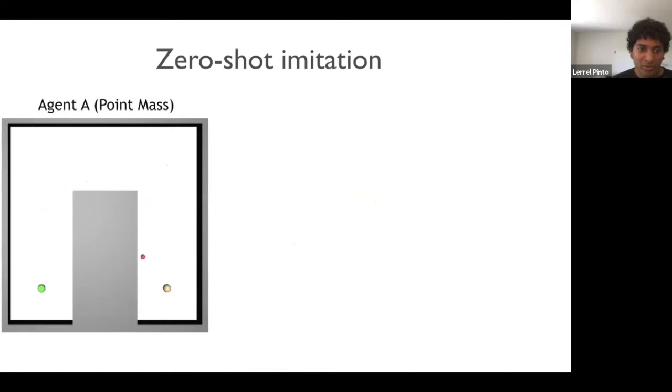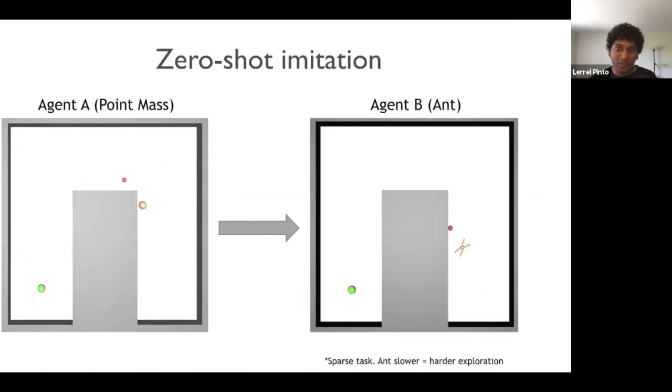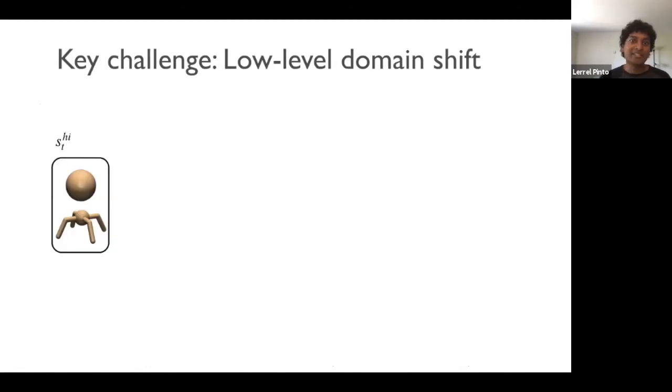Now let's look at a slightly harder problem where agent A has to reach the green dot, but it should do so with an obstacle in between. Now if you transfer this policy from agent A to agent B, we see that the ant is able to go a little bit, but then it gets stuck at the corner. So why is this happening? Why is agent B, the ant, getting stuck over here?